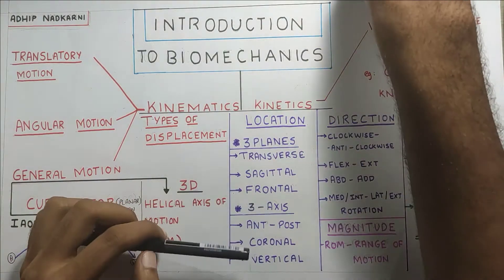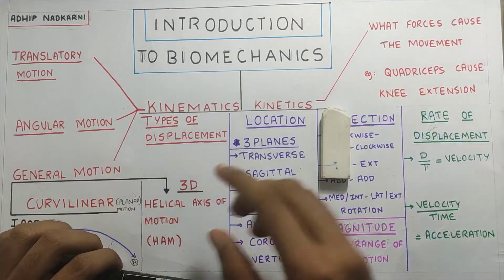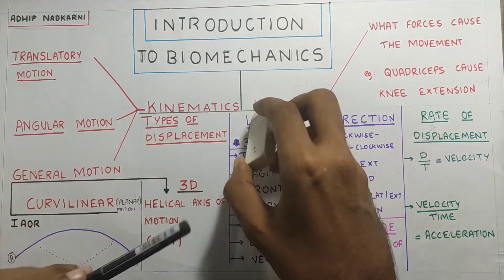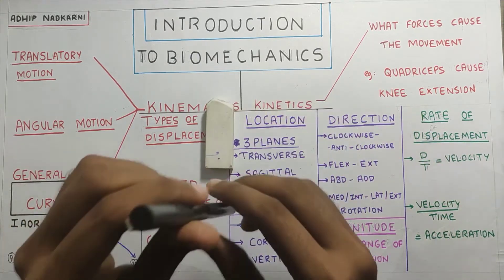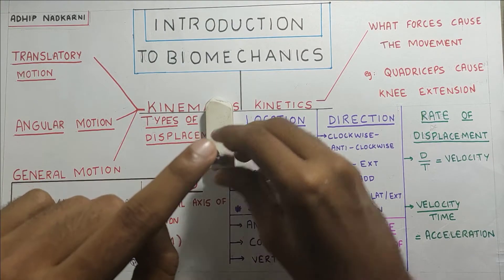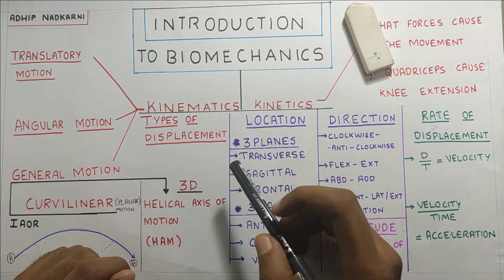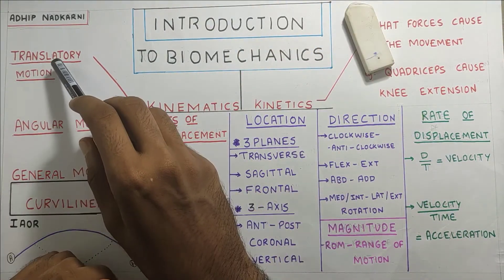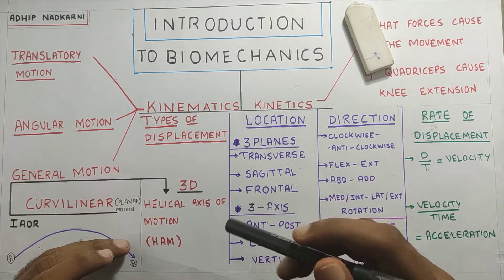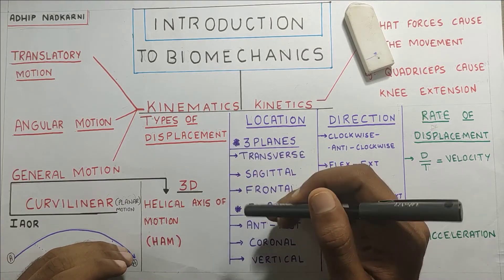Translatory motion occurs in one plane and does not occur around any axis, whereas angular motion always occurs around an axis — so if this is the axis, the object will move around the axis. In human beings, pure translatory or angular motion is very rare, whereas curvilinear or three-dimensional motion is mostly seen.